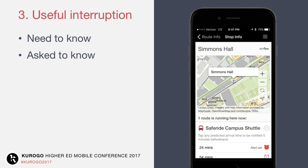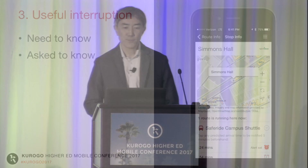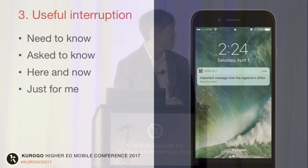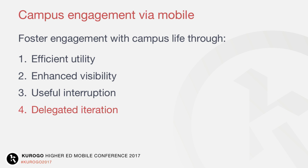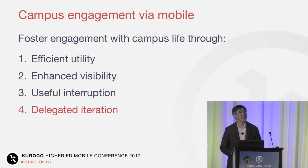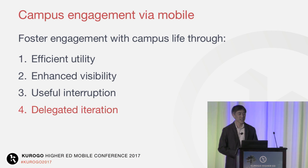There's also 'just for me' — only a few schools are taking advantage of the capability in Communicate to serve as a conduit for messages originating from external systems. We have an API by which systems like an LMS or Registrar can send notifications to groups of people or even targeted individuals. So that's efficient utility, enhanced visibility, and useful interruption — hopefully things you can take home after this conference and start planning around. But the last area I want to talk about is delegated iteration.